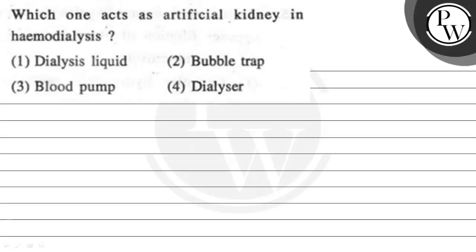Hello, children. Let's read the question first. The question states: which one acts as artificial kidney in hemodialysis? Four options are given. First, dialysis liquid. Second, bubble trap. Third, blood pump. Or fourth, dialyzer.